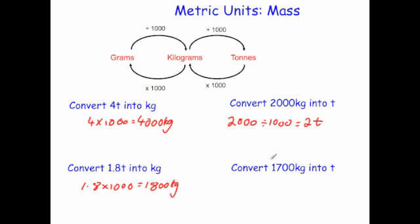Convert 1,700 kilograms into tons. To convert from kilograms to tons, you divide by a thousand. So we do 1,700 divided by 1,000. Take off the two zeros, put the decimal point in — that would be 1.7 tons.